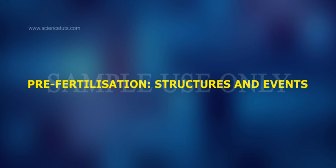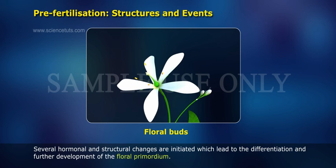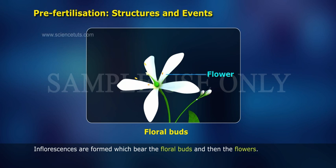Pre-Fertilization Structures and Events. Several hormonal and structural changes are initiated which lead to the differentiation and further development of the floral primordium. Inflorescences are formed which bear the floral buds and then the flowers.